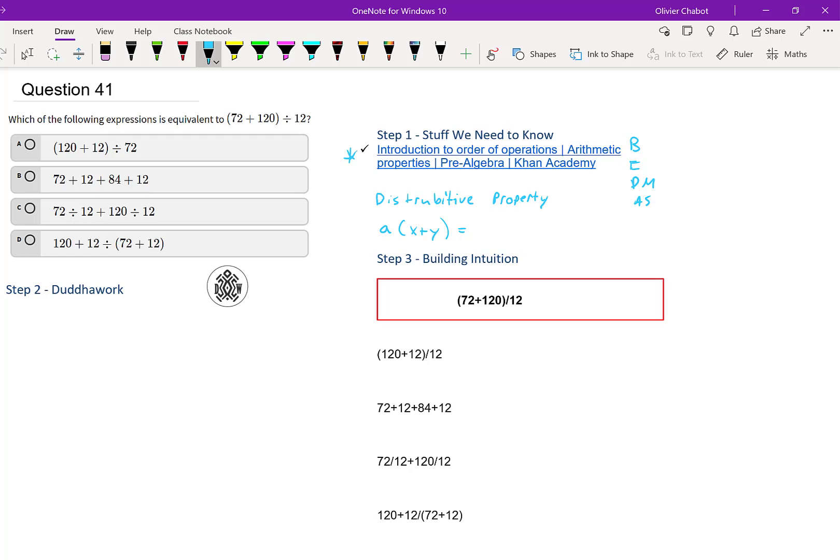The other thing you might want to know before doing this problem is the distributive property of multiplication. So just to review, if we have a times a bracket x plus y, well the a distributes to both, that's all it's saying. So really it's x plus y plus x plus y, or ax plus ay. So this would be a times x plus a times y.